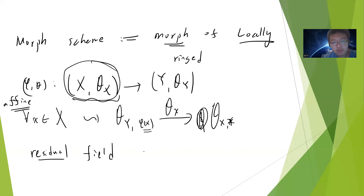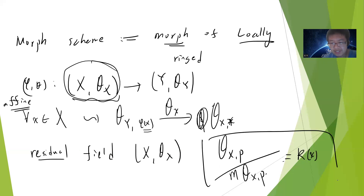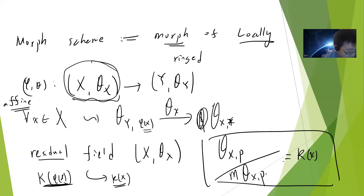There is also a residual field. For a local ring space, at each stalk you get a local ring, and you can quotient by the maximal ideal of O sub X at p — this gives you a field, usually called k of x. If you have a ring morphism, it induces a map from k of phi of x into k of x, so k of x is a field extension. Combining everything, you get a category of schemes.